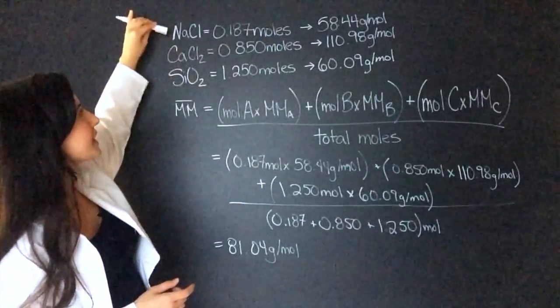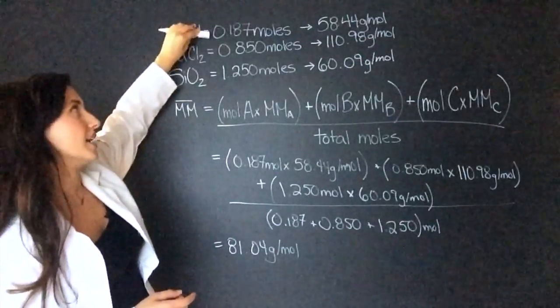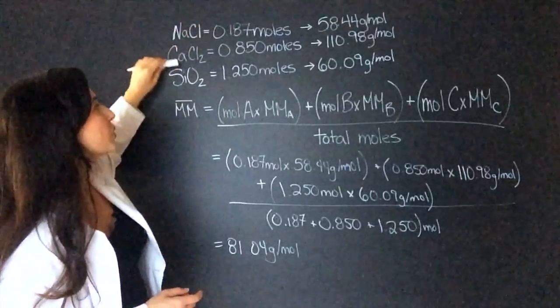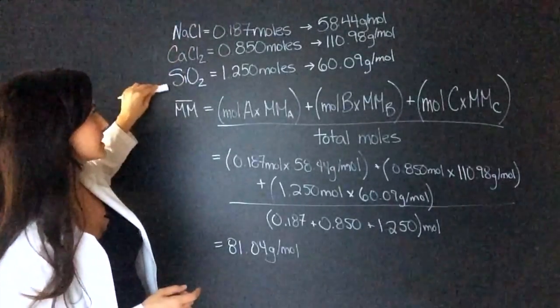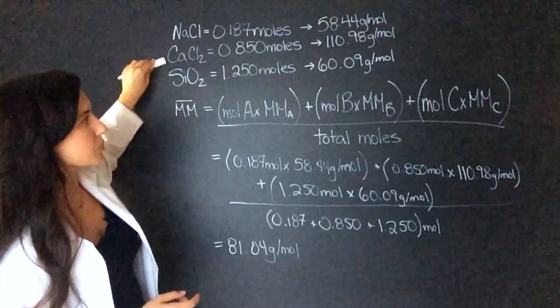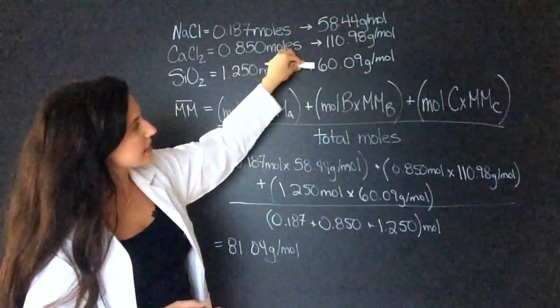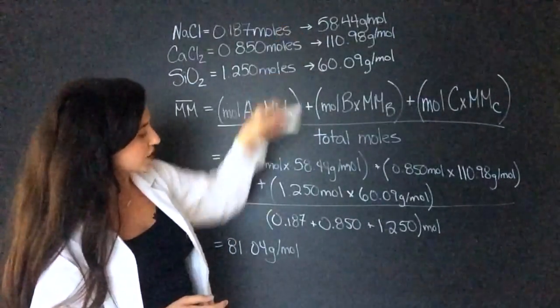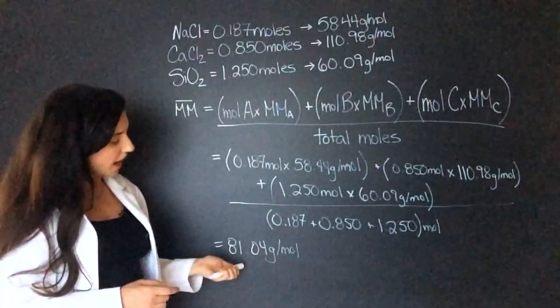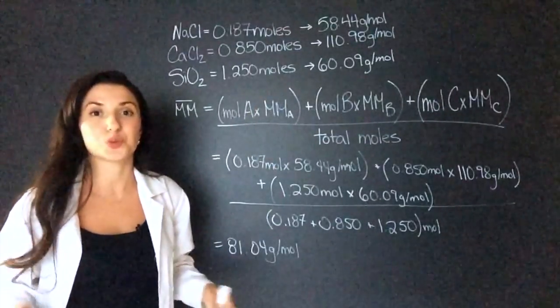In this case, there is only a little bit of sodium chloride, 0.187. Really, most of the mixture is silicon dioxide and calcium chloride. This is 60 grams per mole and 110. And we see that in our average being 81. It's between those numbers.